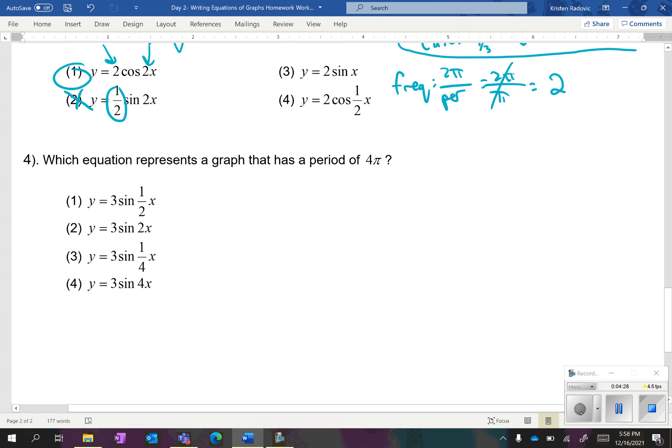Last one, which equation represents a graph that has a period of four pi? Remember, if you see four in the question, you're not going to have four in the answer, because all of these values are all frequencies. So, you need to find the frequency, which is two pi over your period. So, our period here is four pi. The pi's cancel out, and two divided by four is one-half. So, that's going to give me a frequency of one-half.